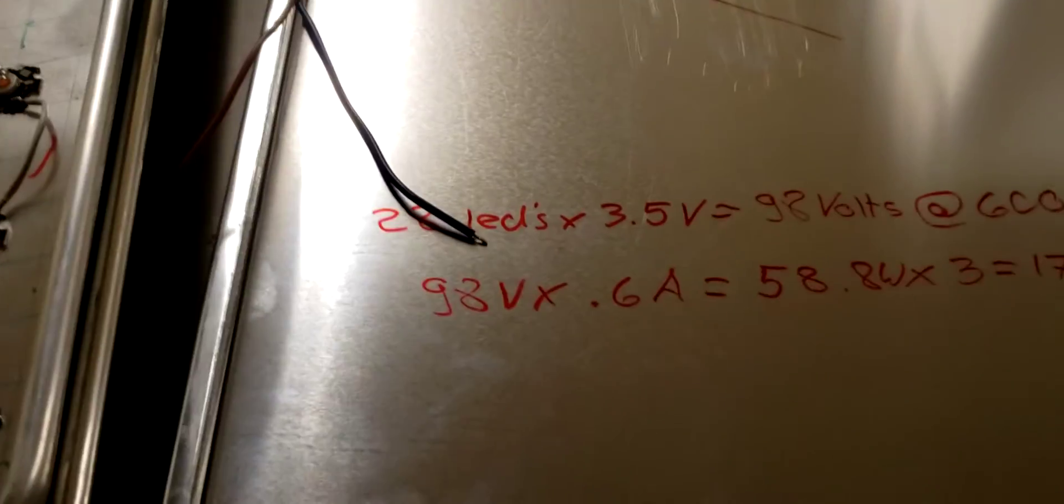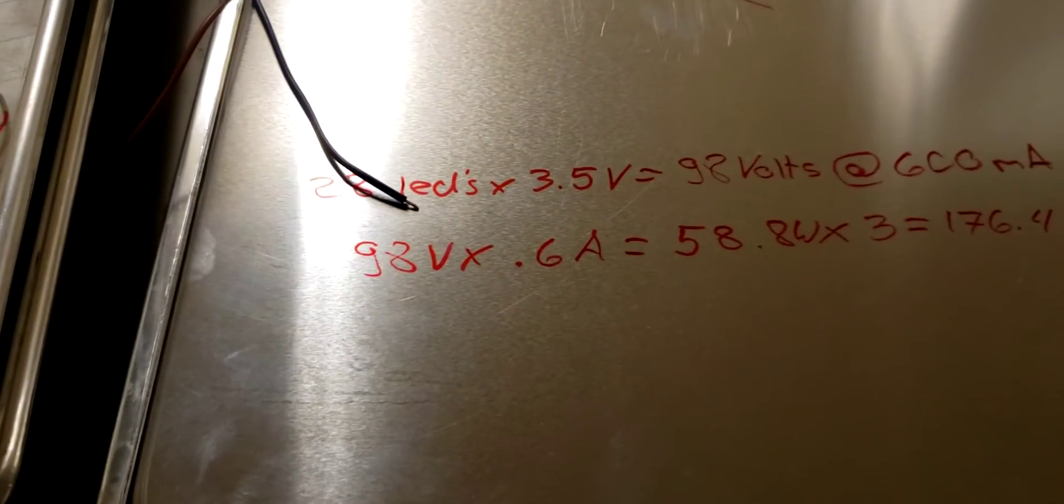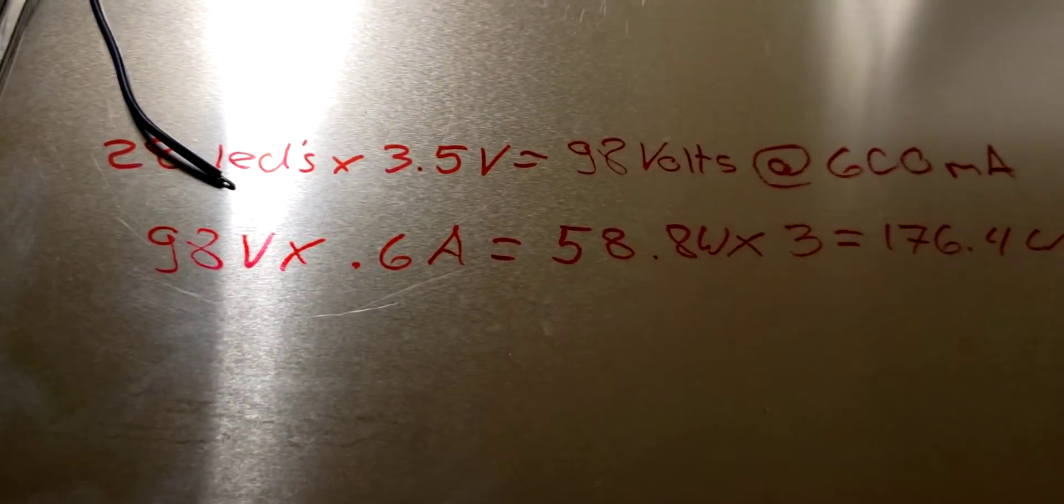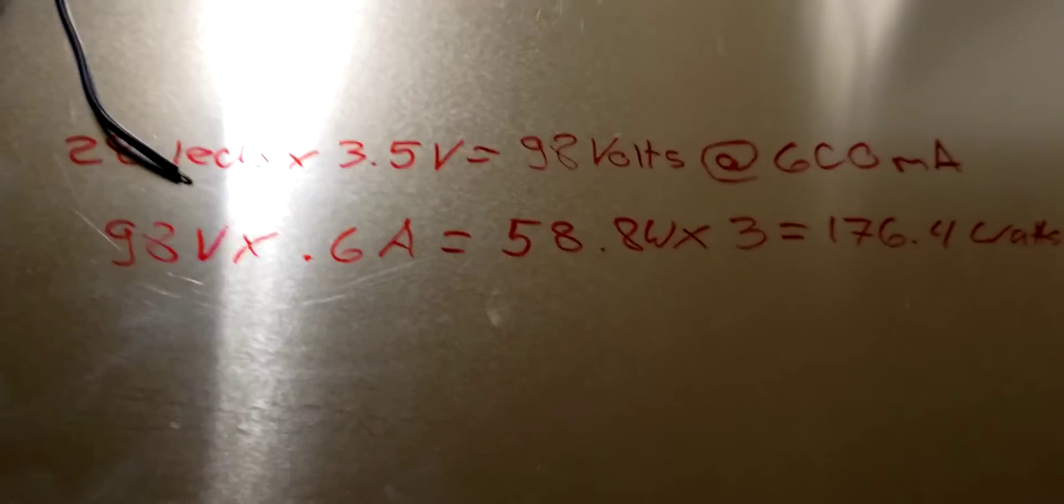So now I have 98 volts at 0.6 amps, that means we're pulling 58.8 watts. And I have three circuits, so this panel is going to pull about 176.4 watts.